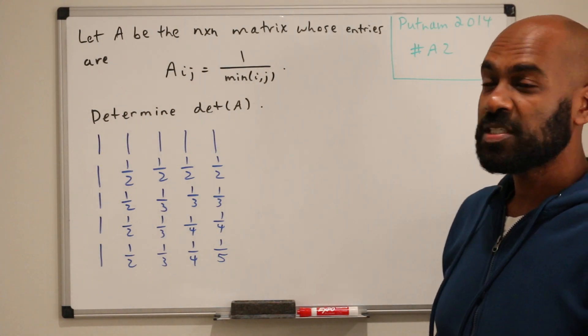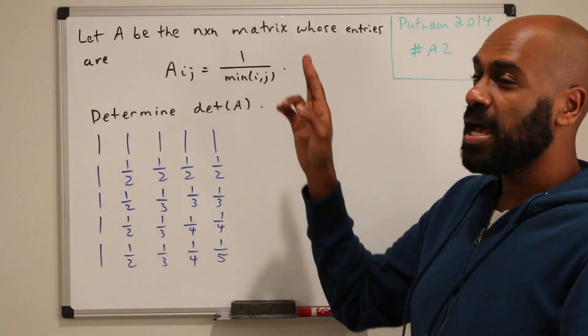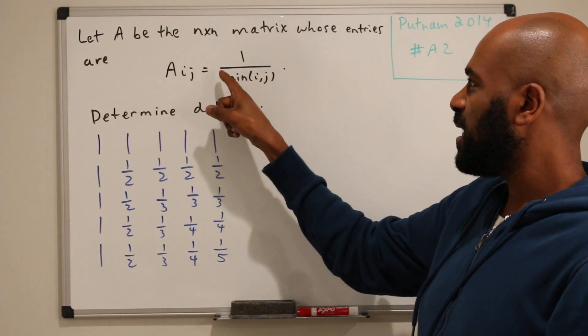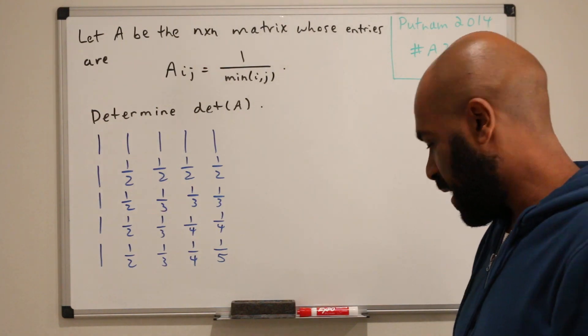We're going to work on Putnam 2014 number A2. It says let A be the n by n matrix whose entries are given by the following: Aij is 1 over the minimum of i and j. Determine the determinant of A.